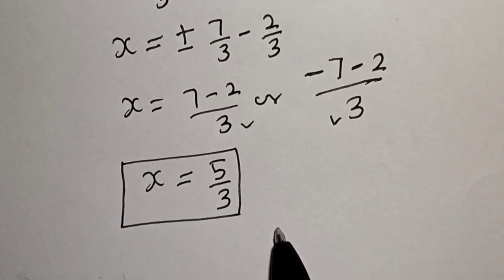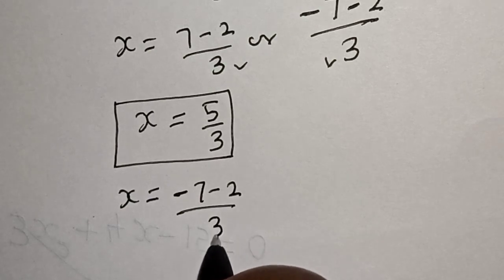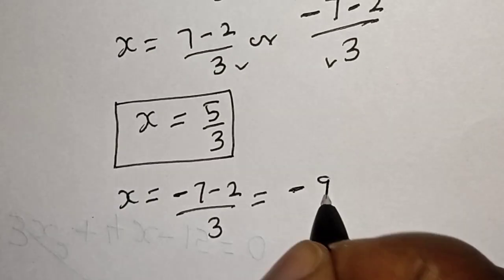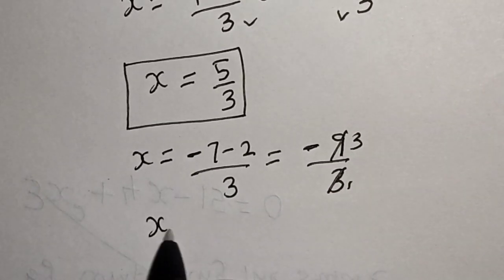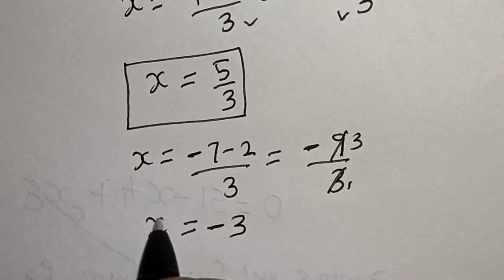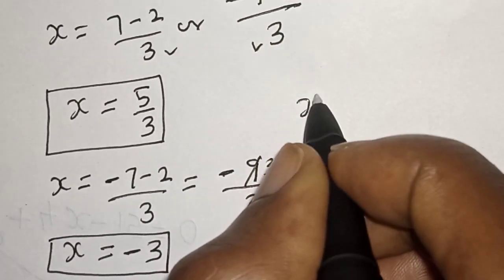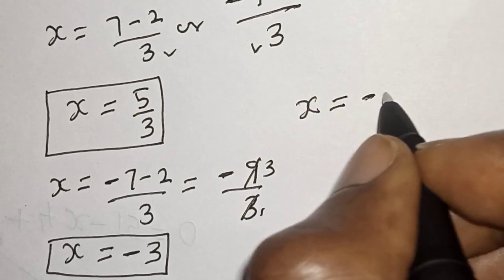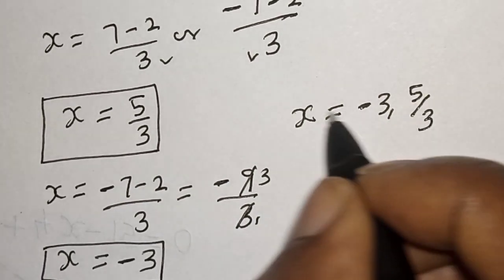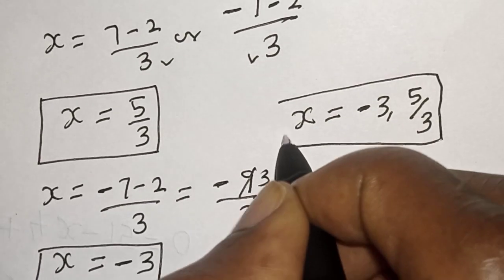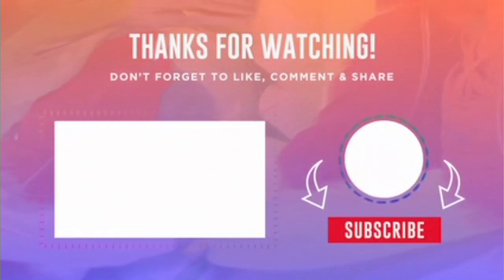From the negative case: x = (-7 - 2)/3 = -9/3 = -3. Therefore x = -3 is the second value of x. Our final answers are x = -3 and x = 5/3. If you enjoyed the class, please don't forget to like, share, comment and subscribe. Thank you.